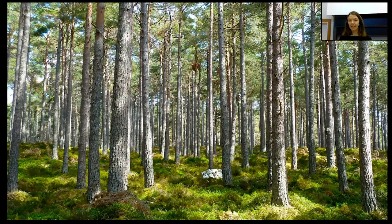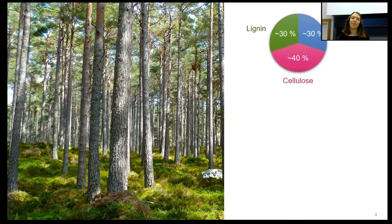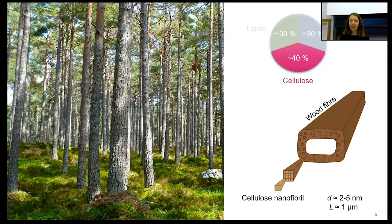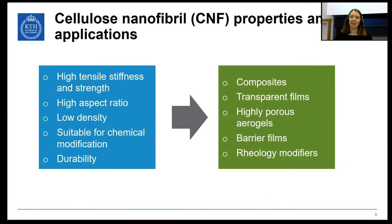The main components of wood are lignin, hemicellulose, and cellulose. Cellulose is a straight-chain polymer whose primary function in wood is to provide tensile strength and stiffness. You can find it in the cell wall of wood fibers in the form of cellulose nanofibrils. These fibrils can be liberated from the wood fibers — they are long and very slender particles with widths of just a few nanometers and lengths in the order of one micrometer. These nanofibrils have many desirable properties: high tensile strength and stiffness, high aspect ratio, low density, surfaces suitable for chemical modification, and they are also very durable.